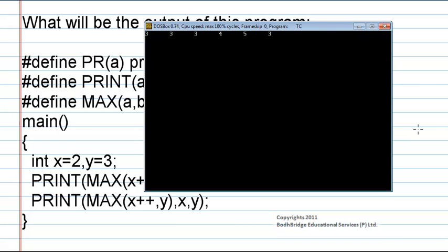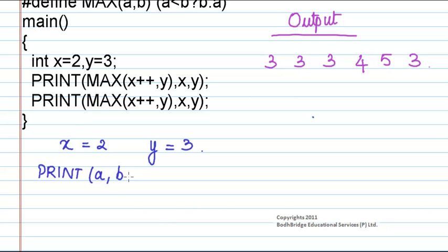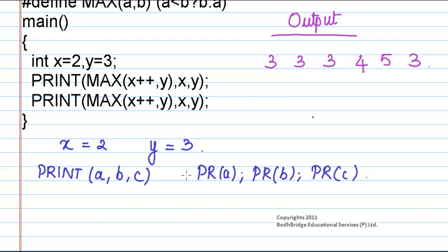Now let us check how we got this output. The value of x is initialized to 2 and the value of y is initialized to 3. When the print macro is called, its definition is print(a, b, c) which expands to pr(a), pr(b), and pr(c). Since there is no hash prefix before the operand in the definition of this macro, the argument will be expanded first.